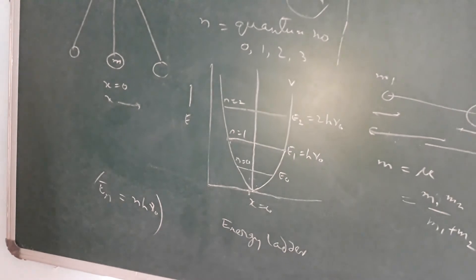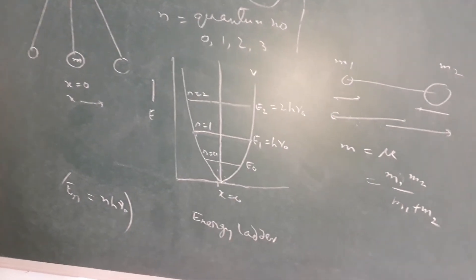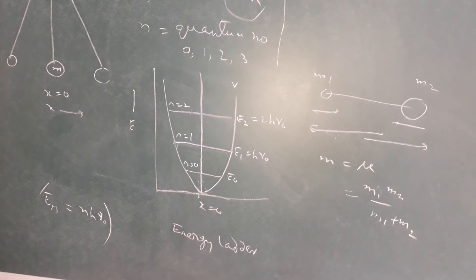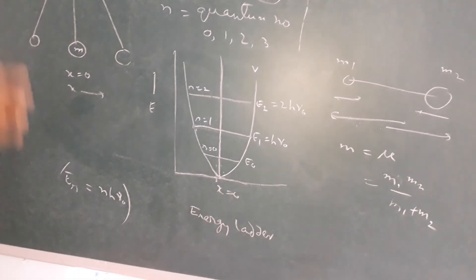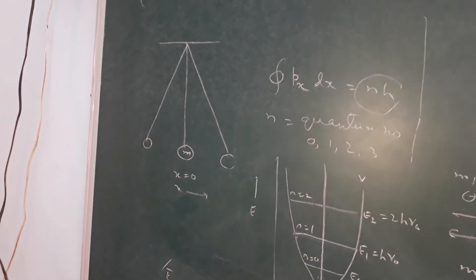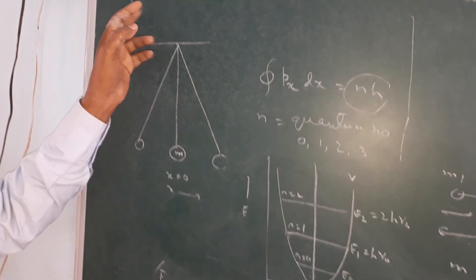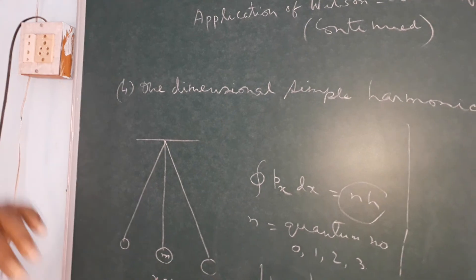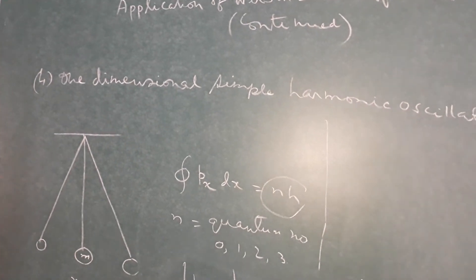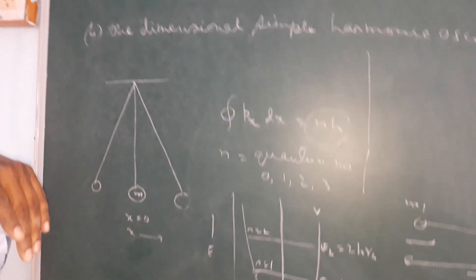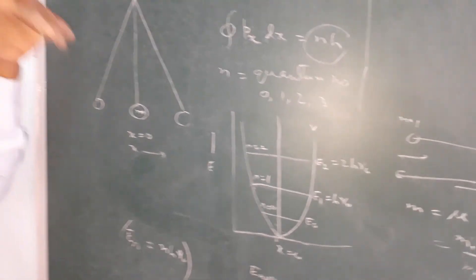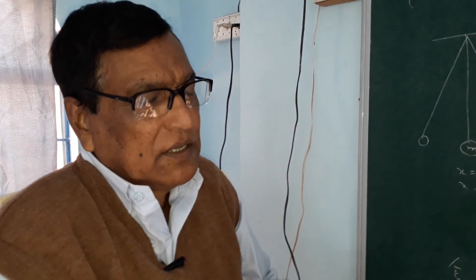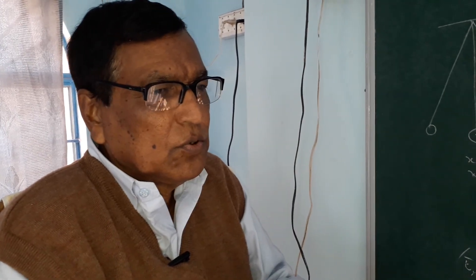This is all about the one-dimensional simple harmonic oscillator. There are 4 applications of the Wilson-Sommerfeld quantization rule in total, which have been discussed one after another with full mathematical details and explanations. I thank all of you who are watching this video.